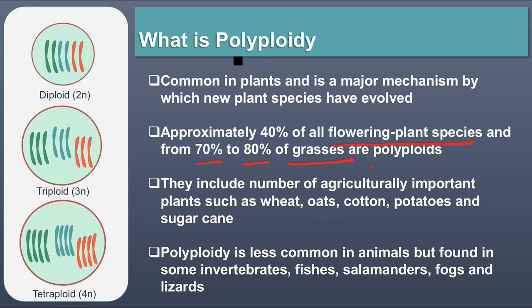Approximately 40% of flowering plant species are polyploid. In grasses, 70–80% are polyploid — the percentage is quite high. Polyploidy is agriculturally very important. Polyploidy is less common in animals but found in some invertebrates like fishes, salamanders, frogs, and lizards. In plants, it is very common and is a major mechanism by which new plant species evolve.